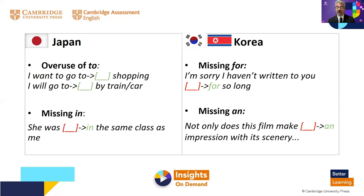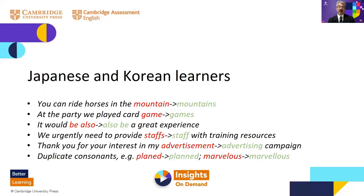Conversely, Korean students will often omit 'for' — for example, 'I'm sorry, I haven't written to you for so long' — something that Japanese students tend not to do. Korean students also tend to miss articles, as in 'not only does this film make an impression with its scenery.' However, Japanese and Korean learners actually have a very large overlap in the kinds of mistakes they make.